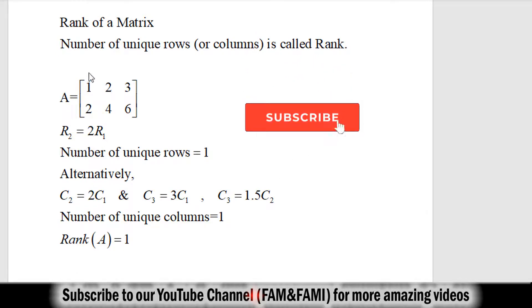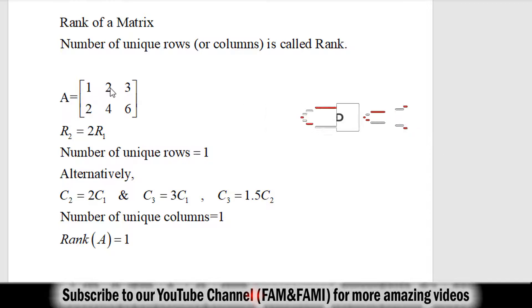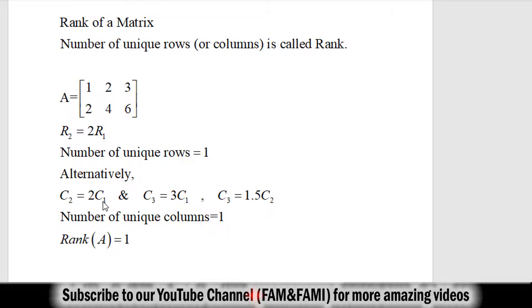Alternatively we can look for the number of unique columns. If you look at the second column containing two elements 2 and 4, these can be obtained by multiplying the elements in column 1 by constant 2. So 1×2 gives 2, and 2×2 gives 4. Notationally we write it as column 2 equals 2 times column 1.